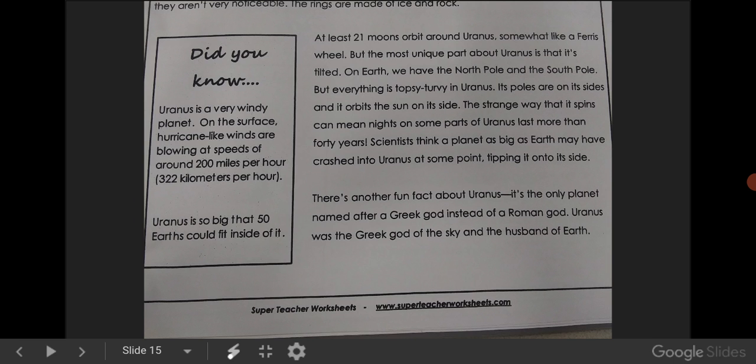But the most unique part about Uranus is that it's tilted. On Earth, we have the North Pole and the South Pole, but everything is topsy-turvy on Uranus. Its poles are on its sides, and it orbits the Sun on its side. The strange way that it spins can mean nights on some part of Uranus last more than 40 years. Scientists think a planet as big as Earth may have crashed into Uranus at some point, tipping it onto its side.